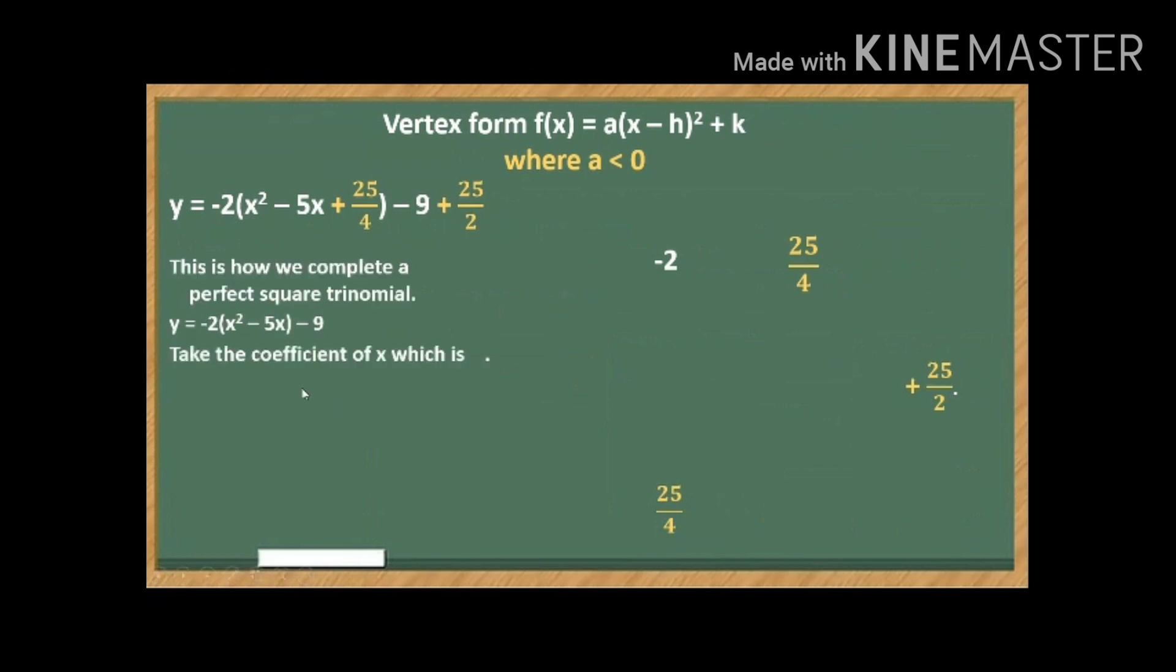So let us take the coefficient of x. Now the coefficient of x is, of course, 5. And then we multiply 5 by 1 half. That becomes 5 over 2. Its product. Or we can divide 5 by 2 and the quotient is the same, 5 over 2.